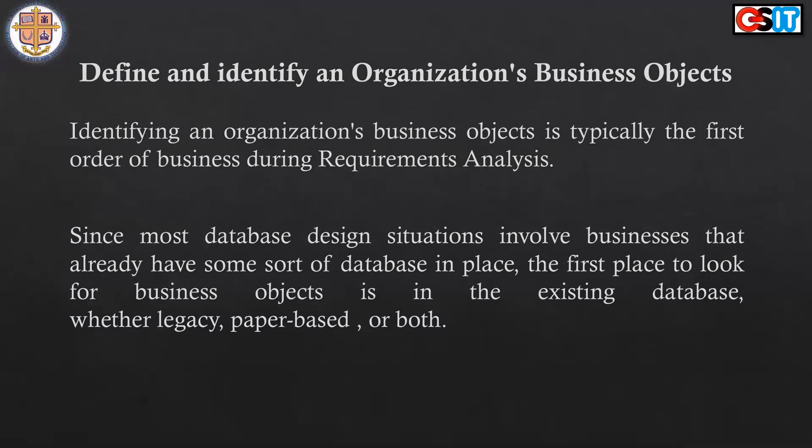Identifying an organization's business objects is typically the first order of business during requirements analysis. In our ERD lecture, these are what we call entities — the things that provide information to the database when we create them. Since most database design situations involve businesses that already have some sort of database in place, the first place to look for business objects is in the existing database. There could already be tables in the existing database that you can examine if you want to create one.